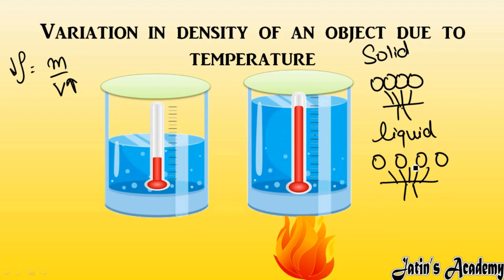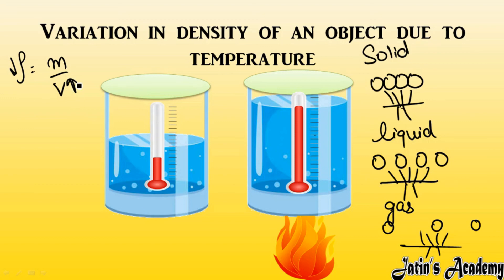If I talk about gases, particles are very far away from each other, and if I give more and more heat to gas particles, they move even further apart. This means volume is going to expand too much. If there is too much expansion in volume, density is going to reduce too much. So the maximum decrease in density is seen in gases as compared to solids and liquids.